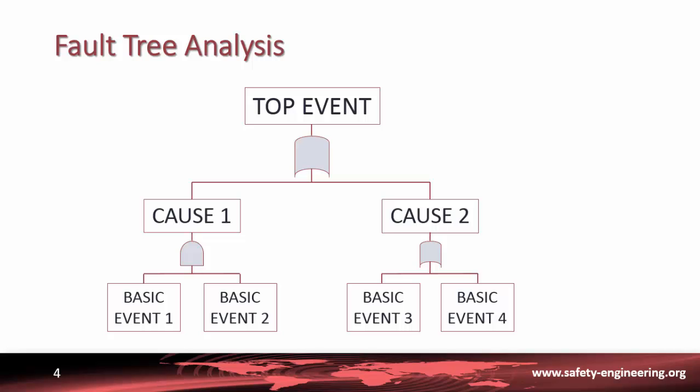Finally, from the probabilities of the basic events, you can calculate the probability of occurrence of the top event. This method also allows us to search for minimal cut sets, which are the smallest combinations of events leading to the undesired event.